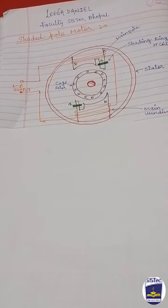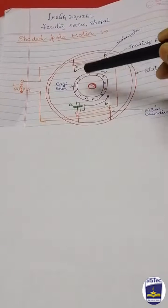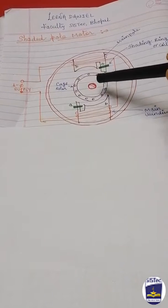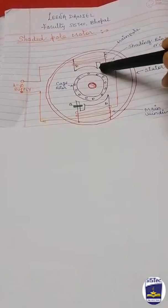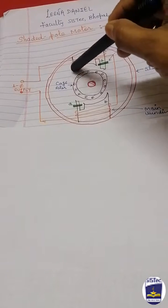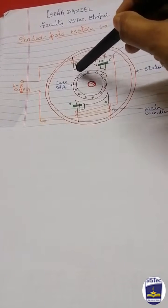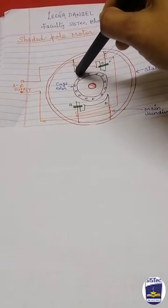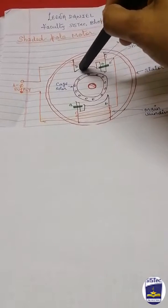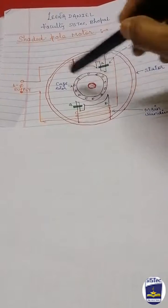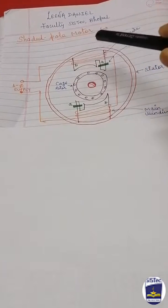It consists of a stator and a cage type rotor. The stator is made up of salient poles. Salient poles means there is a difference in the air gap. Here you can see the air gap is large and here the air gap is smaller. This kind of construction is known as a salient pole.